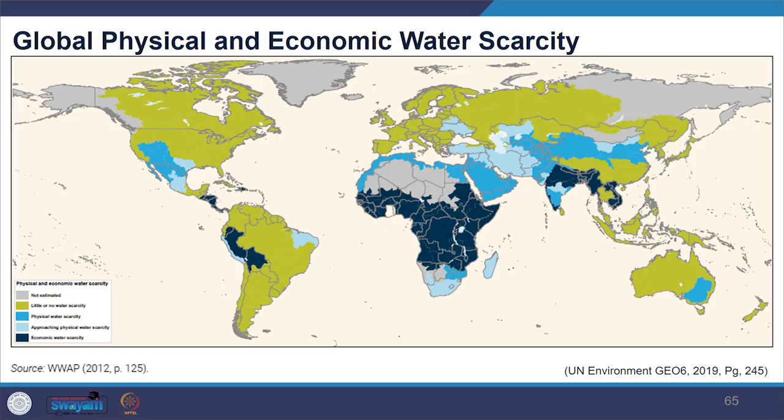In the image you can see global physical and economic water scarcity. The blue polygon indicates physical water scarcity as per the definition, while the black polygon shows economic water scarcity. Note the difference and see the variation in the Indian context as well.